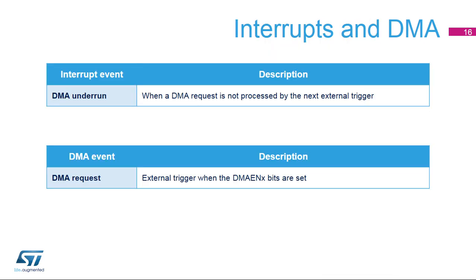To transfer data from memory, a DMA request can be generated. The DAC DMA request is not queued, so if a second external trigger arrives before the acknowledgement of the first external trigger is received, no new request is issued and an under-run flag is set, which causes a maskable interrupt request.